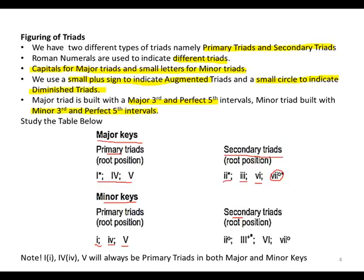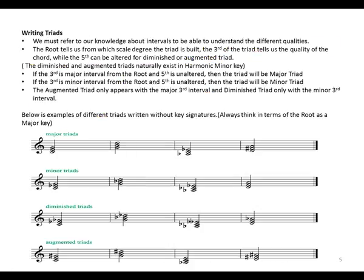For secondary triads in minor keys: 2 and 7 are diminished, 3 is augmented, and 6 is major. Note that 1, 4, and 5 will always be primary triads in both major and minor keys.